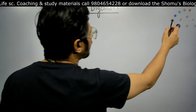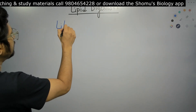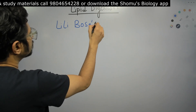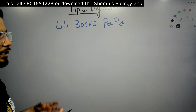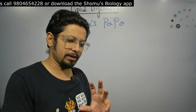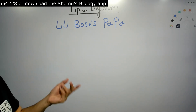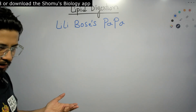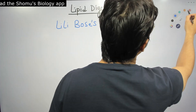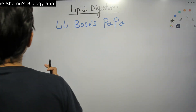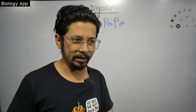Like every mnemonic video, I'm going to write a mnemonic for you, and this one is: 'Lily Boss's Papa.' It's a Hindi and English combination — 'papa' means father. So basically we are talking about Lily Boss's papa, where Lily Boss is the name of a girl. If you remember 'Lily Boss's Papa,' you can easily understand the different enzymes involved in the digestion of lipid in the human body.